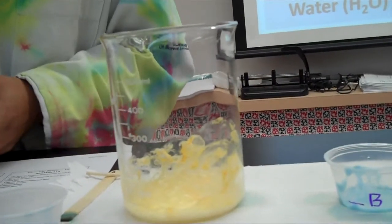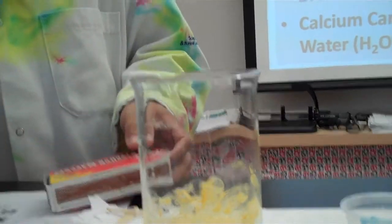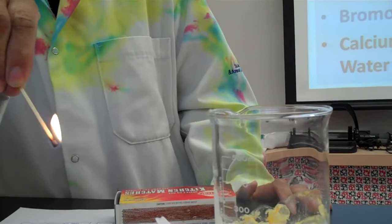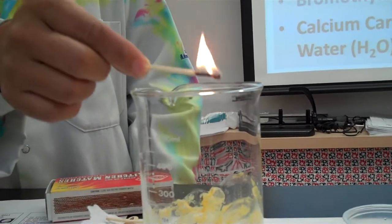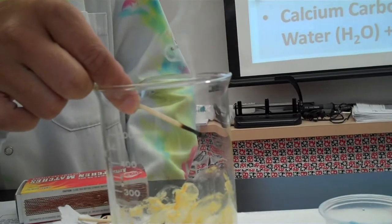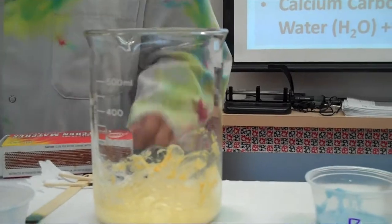One more try, see if we still have a production. Maybe we used up all the CO₂ in that one match. Try it one more time. It's a nicely burning, well-burning match. We'll take it, put it inside the beaker, and voila. CO₂ is being produced because it's extinguishing the flame.